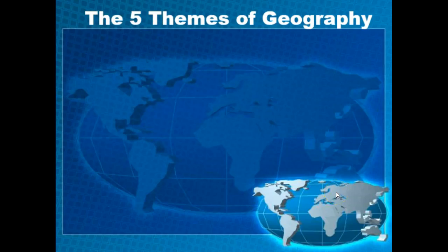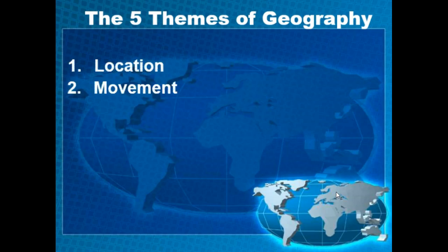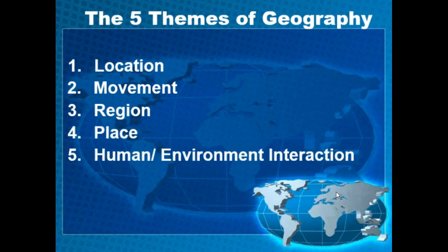What we're going to do for this video is talk about the five themes of geography. We're going to go over these following themes: number one, location; number two, movement; number three, region; number four, place; and number five, human environment interaction.